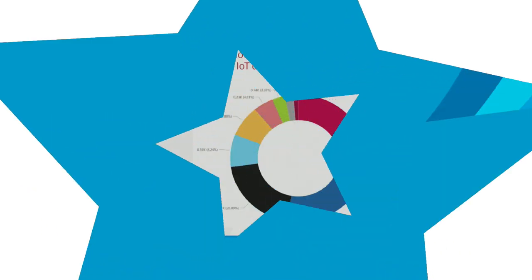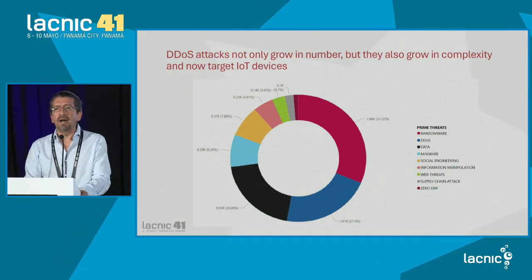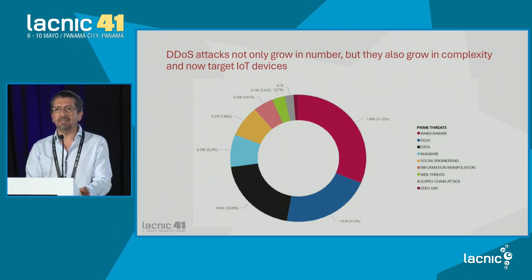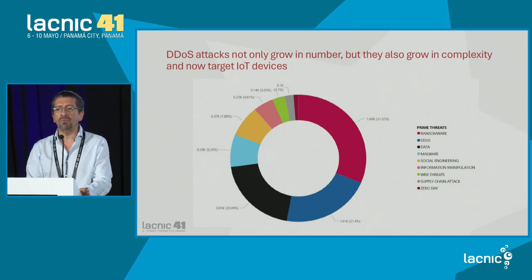I'm going to present two papers that we have been working on over the past two years. The first paper has to do with detection and mitigation of distributed denial of service attacks, which is one of the major problems that we have nowadays with operators in the internet. After ransomware, as you can see on the screen, this is the most used type of attack.